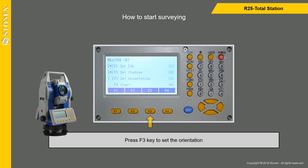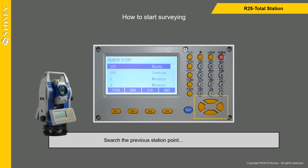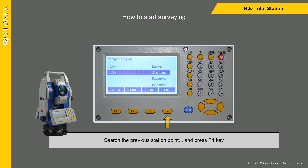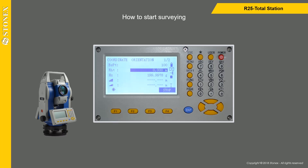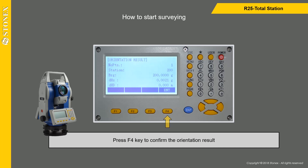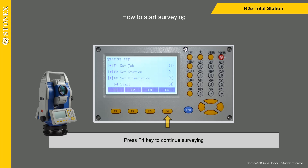Press F3 key to set the orientation. Press F2 key to select coordinate orientation. Press F1 key to select the backside point from the measurement database. Search the previous station point and press F4 key. Aim to the backside point and press F1 key to measure. Press F4 key to confirm the orientation result, then press F4 key to continue surveying.